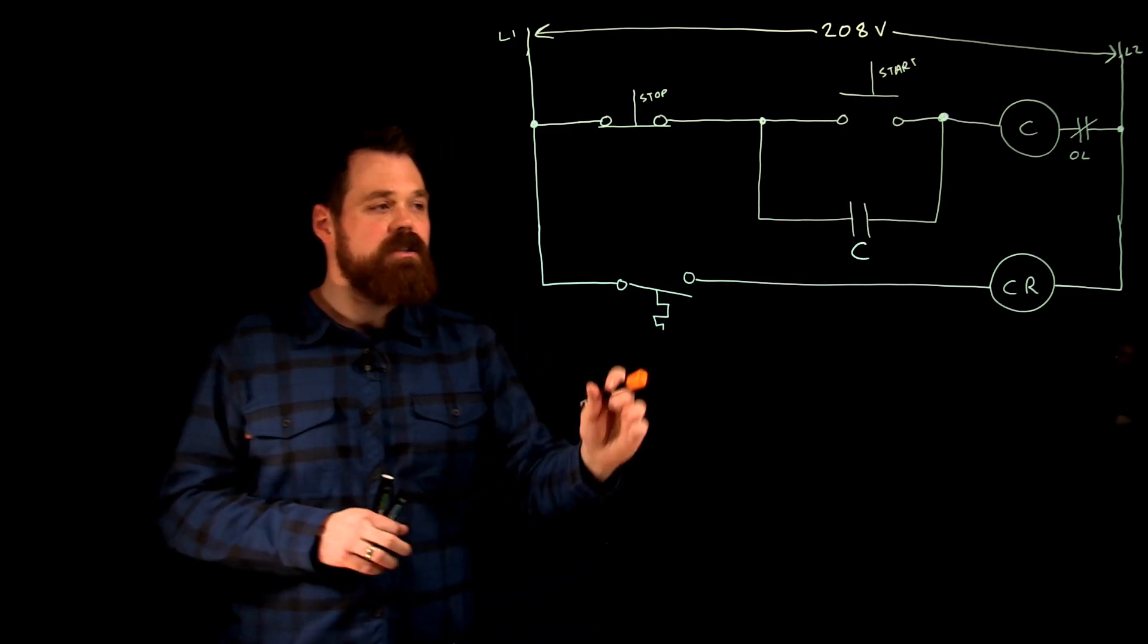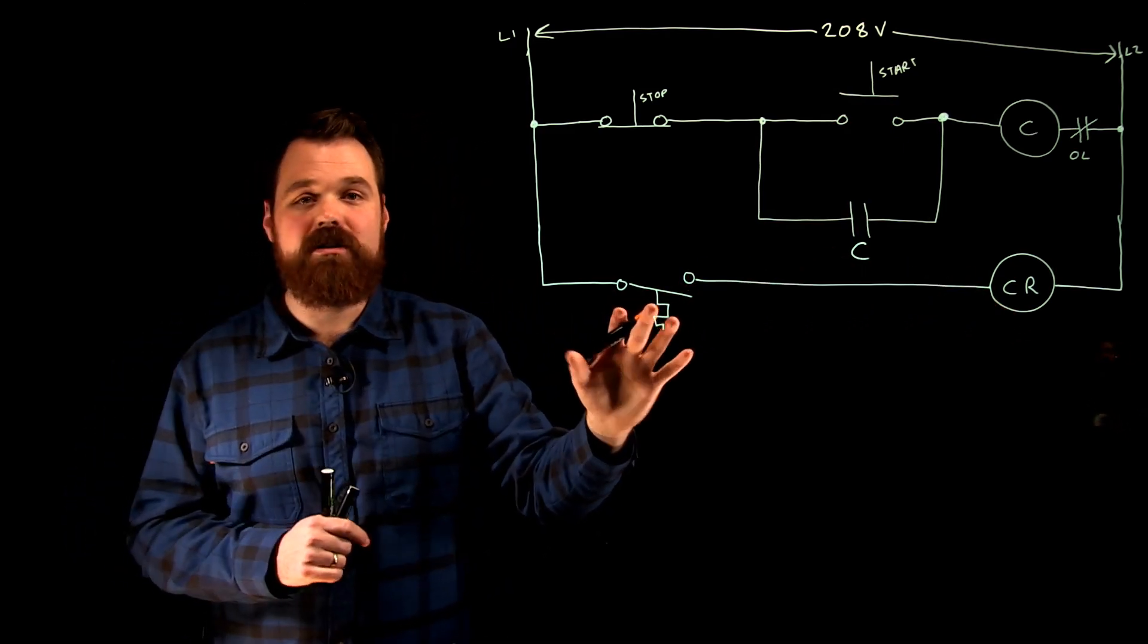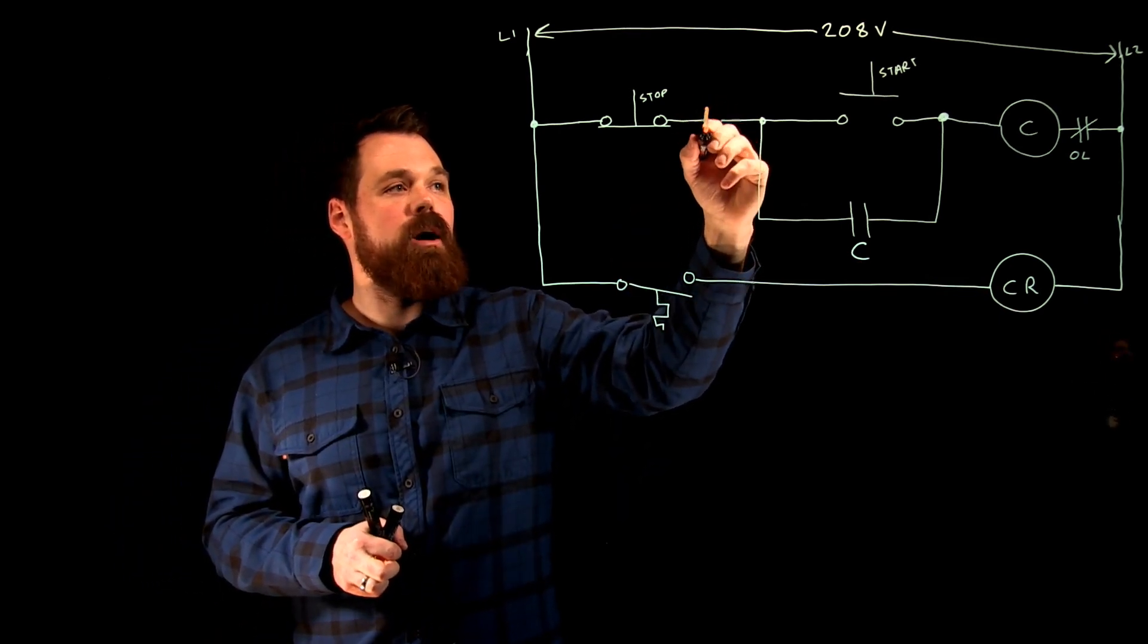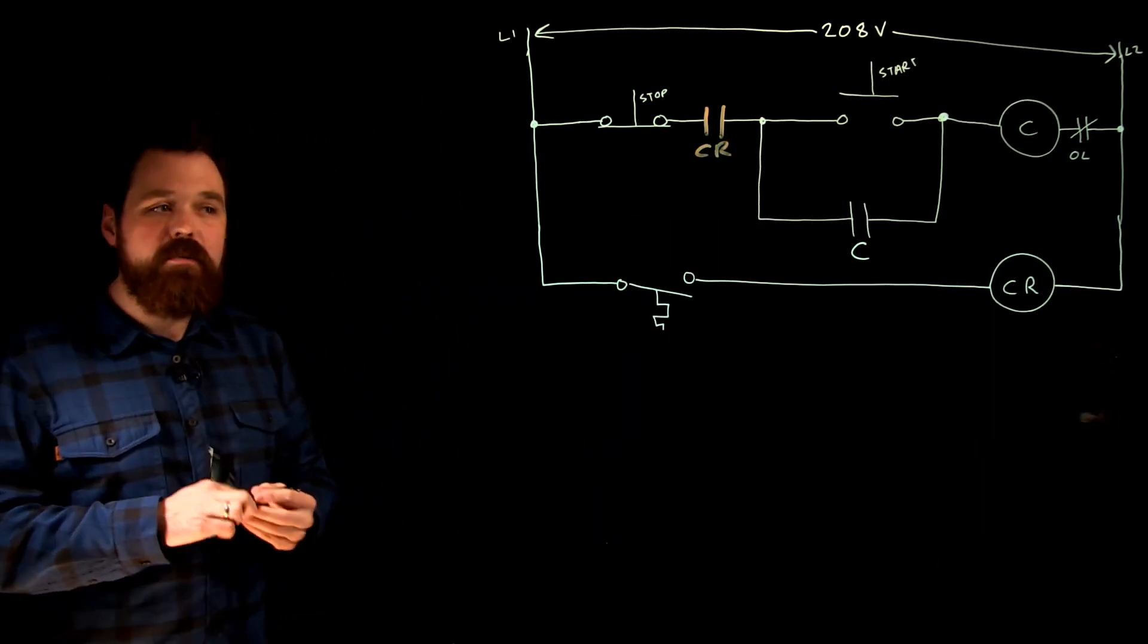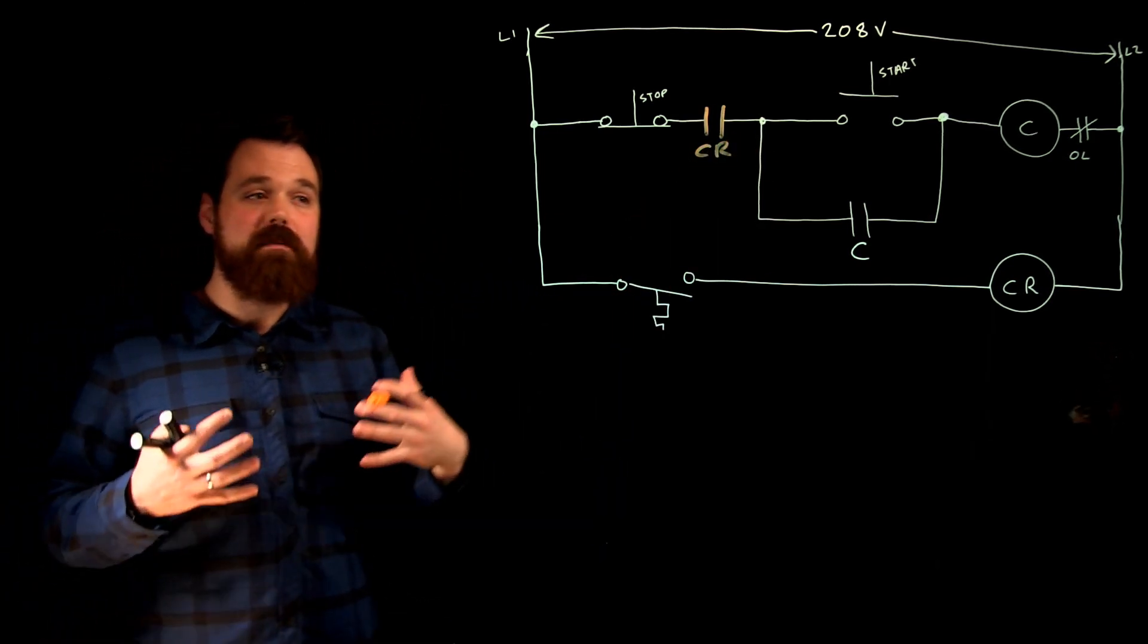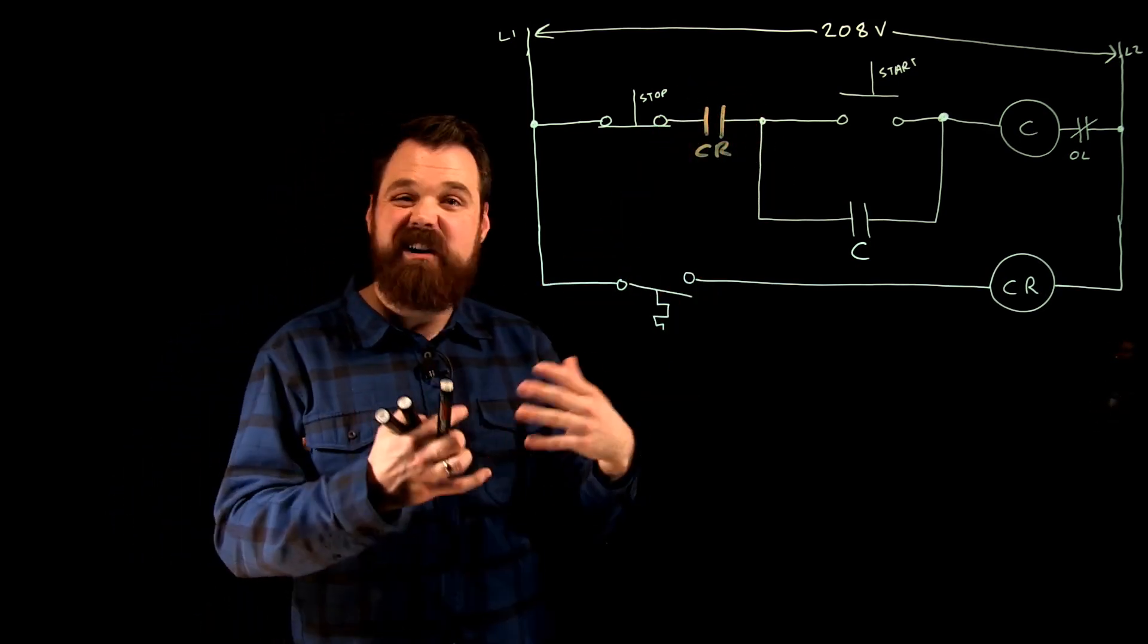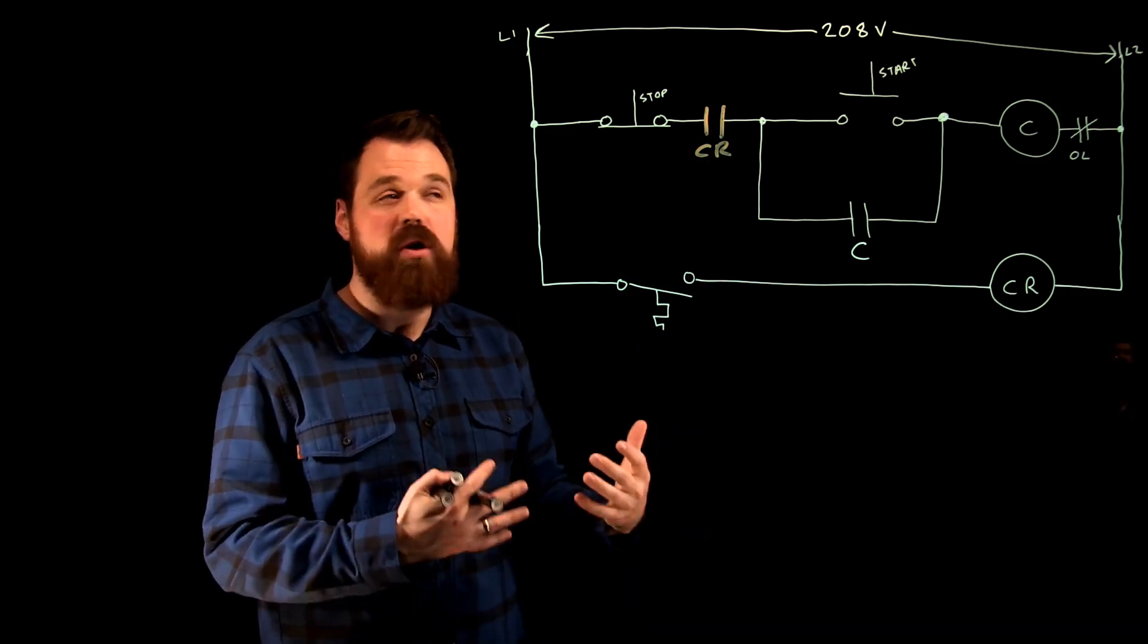So first of all, let's say I took a set of contacts controlled by CR which is controlled by this temperature sensing device, and I were to put it in my stop circuit. If I put that set of contacts in my stop circuit, when this set of contacts would be open, that would affect the stopping in that it would stop the motor. And it would also affect the starting of the motor. When this is open, I cannot start the motor.